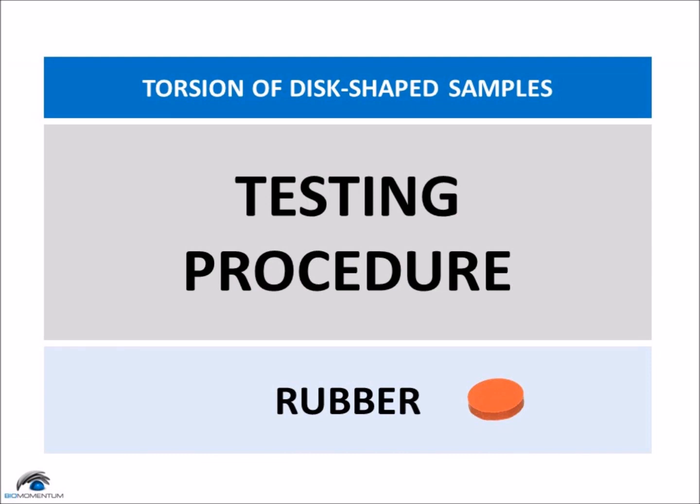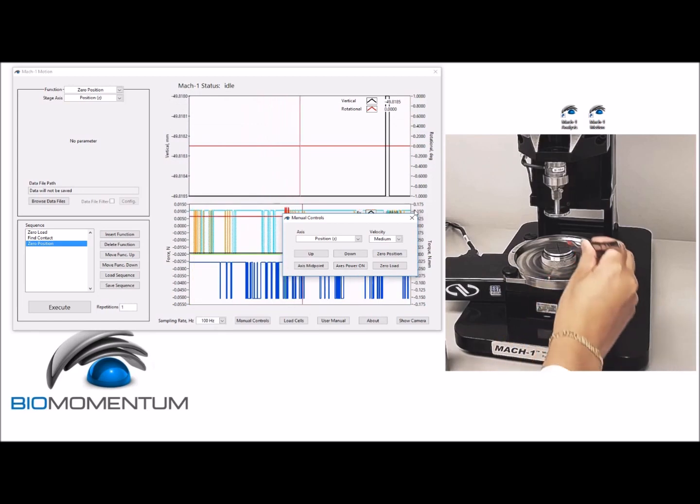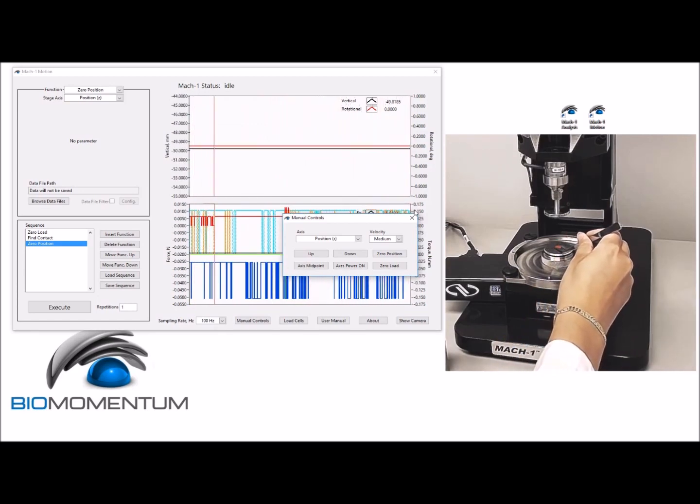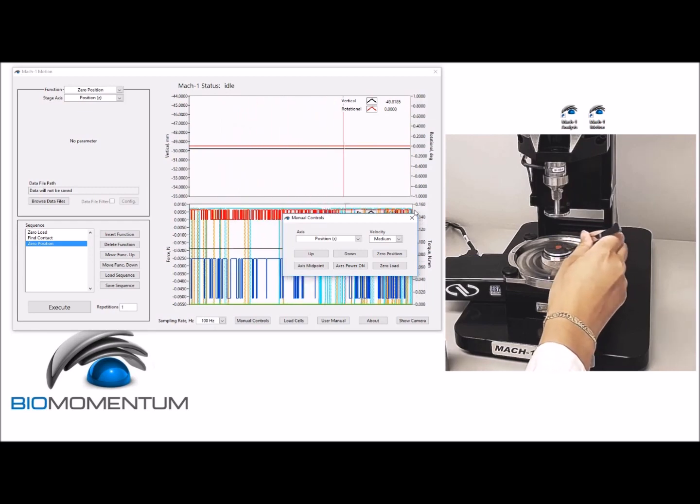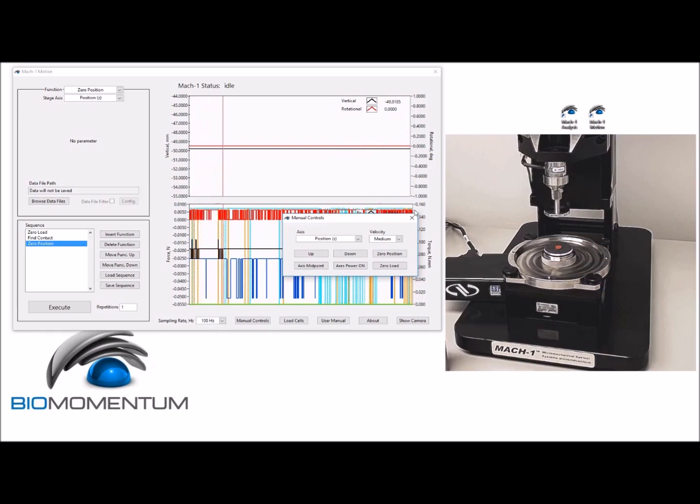And now the testing procedure for the rubber sample. Place the disc-shaped rubber sample in the center of the sample holder using tweezers, using the cross at the center of the sample holder as a guide. Using manual controls...